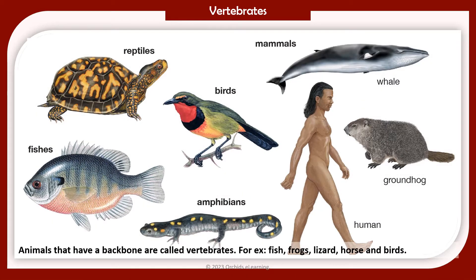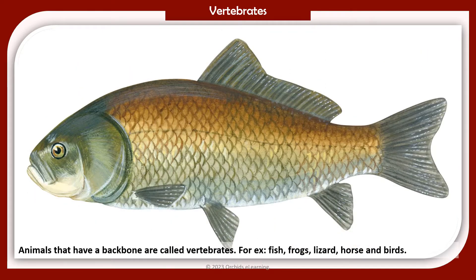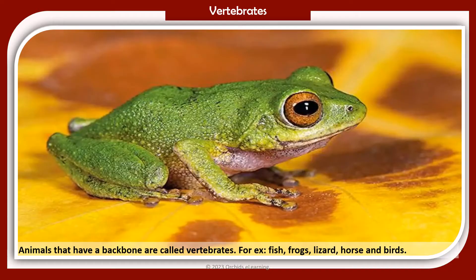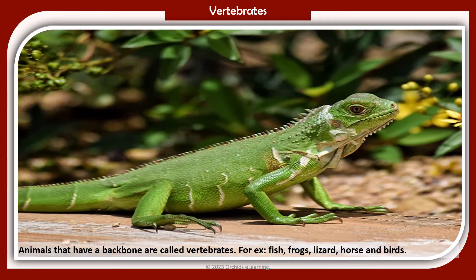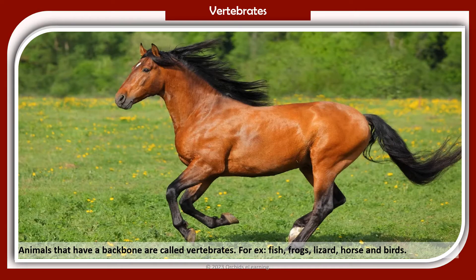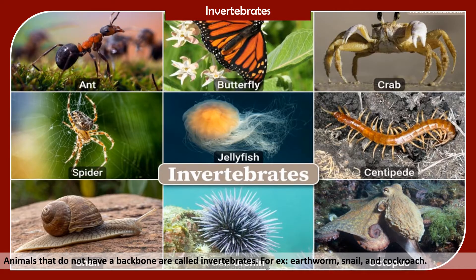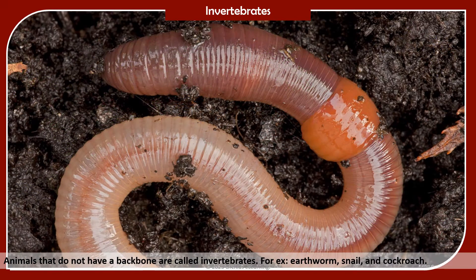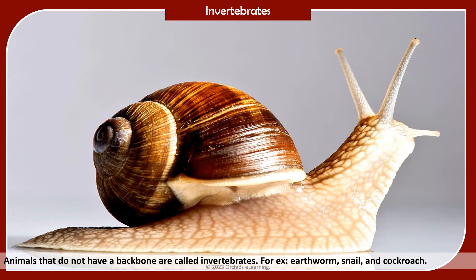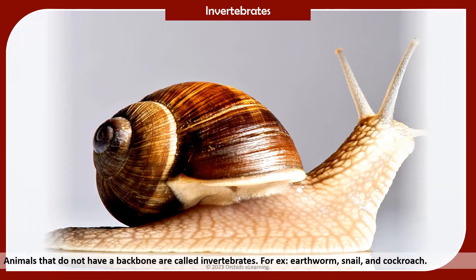Animals that have a backbone are called vertebrates. For example, fish, frog, lizard, horse, and birds. Animals that do not have a backbone are called invertebrates. For example, earthworm, snail, and cockroach.